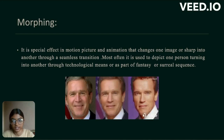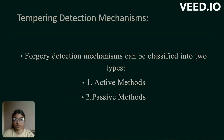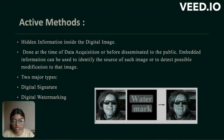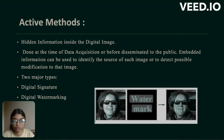Now, image tampering detection mechanisms. There are two types of methods: active method and passive method. The active method involves hidden information inside the digital evidence, done at the time of data acquisition or before disseminating to the public. The embedded information can be used to identify the source of the image or to detect possible modifications. The two major types of active methods are digital signature and digital watermarking.